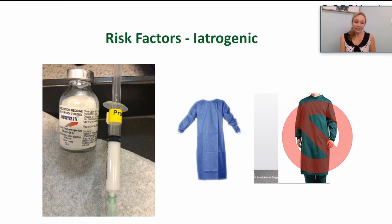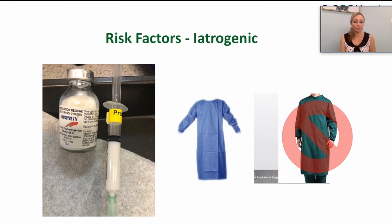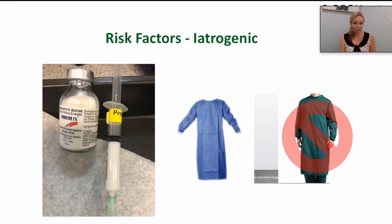Inadequate patient preparation — for example, inadequate or contaminated scrub protocols — can increase risk, as can interrupted versus continuous suture patterns. Theatre protocols are also important. Most infections arising from theatre come from the air, and movement of personnel is an important cause of bacterial shedding. The number of people in theatre can increase the risk by around 30 percent per person, and cotton surgical gowns versus disposable gowns have a 90 percent strikethrough rate.